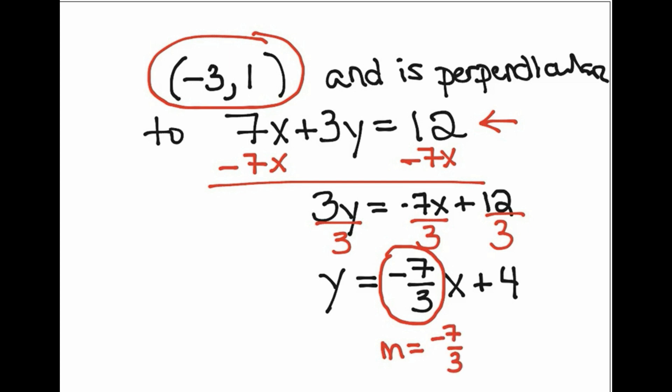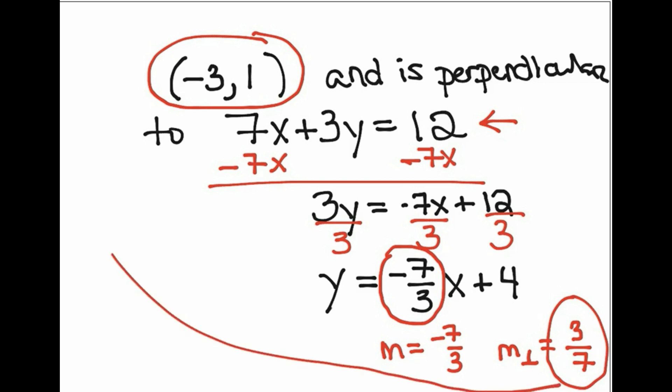But we're talking about perpendicular, so the slope I'm going to use is the opposite reciprocal of negative 7 over 3. I change the sign and flip it, so it turns into positive 3 over 7. I'm going to use this slope along with the point (-3, 1) to find my new equation.